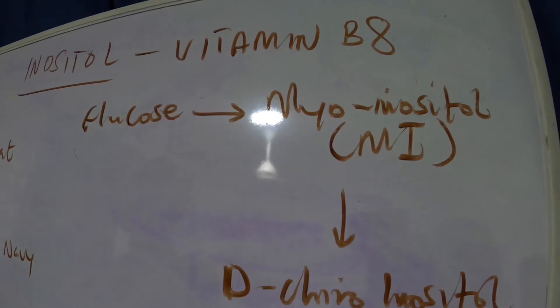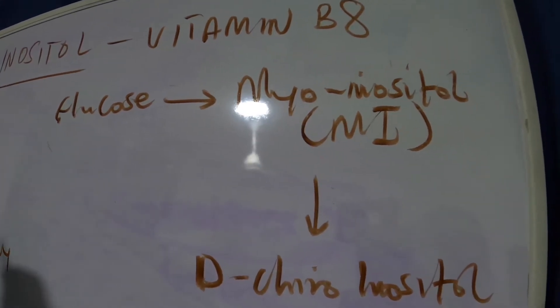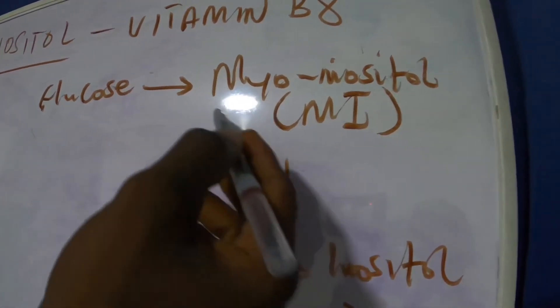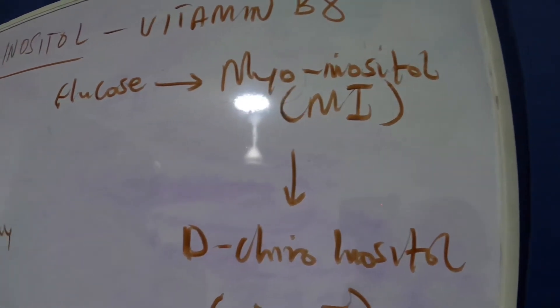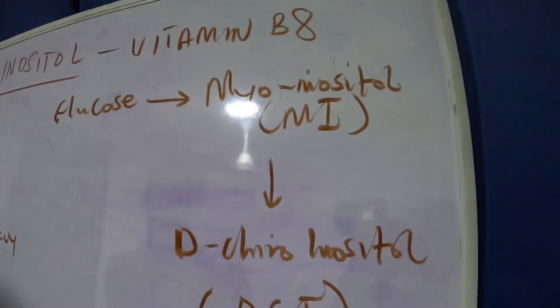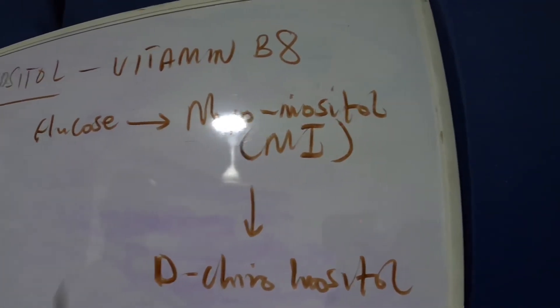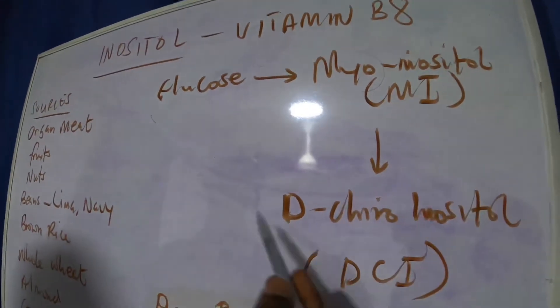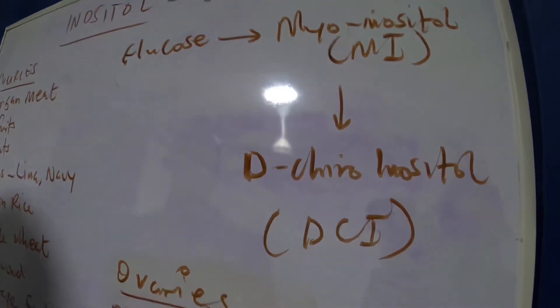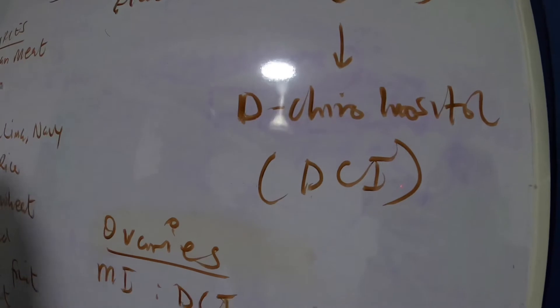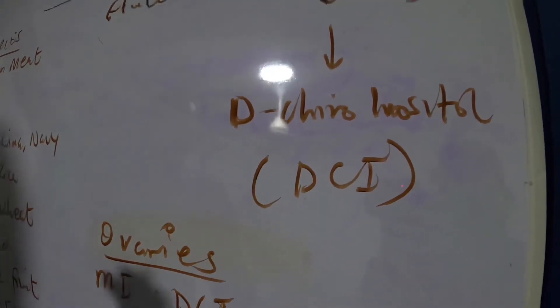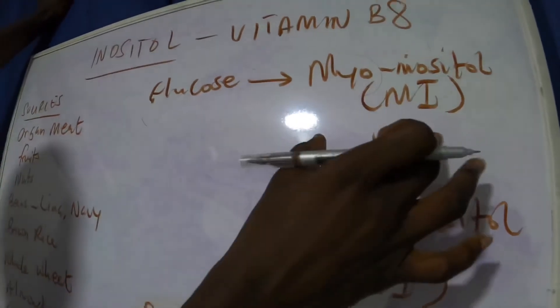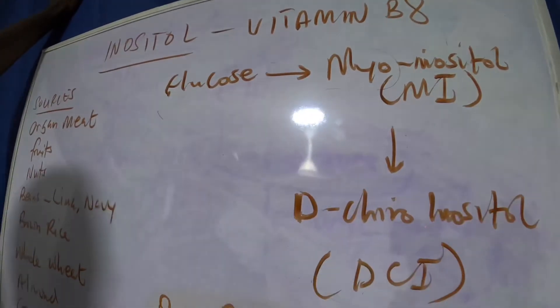Myo meaning muscles—so this inositol is usually found in muscles. Then there's a conversion of myo-inositol, MI for short, to d-chiro inositol, which for short we call DCI. Now what happens is that when there is a conversion from glucose to myo-inositol, there is some conversion from myo-inositol to DCI.